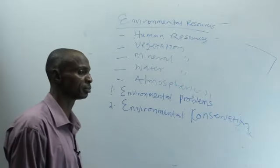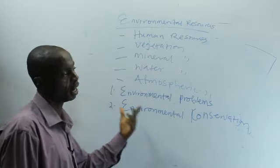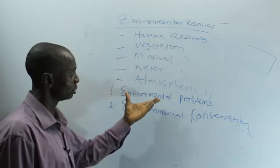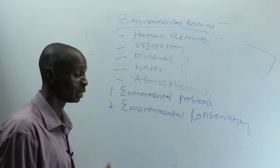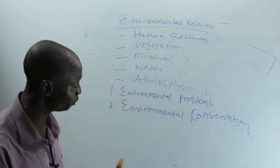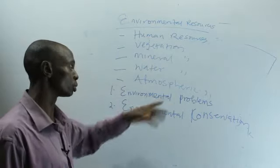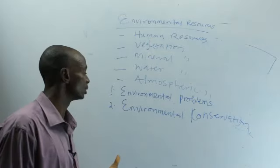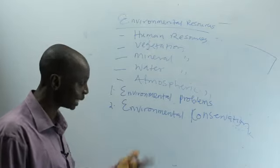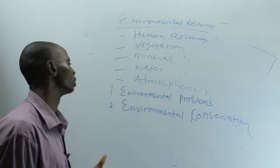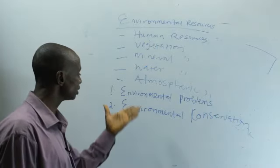Then, how can we solve it? If we know the problem, how can we solve it? So, we can solve it, number one, by environmental education. Educate people about the danger that the activities pose on the environment. Doing that, we enlighten them, let them know. Through that, we can mitigate it.